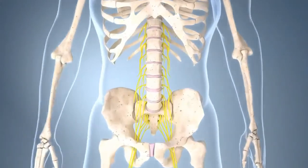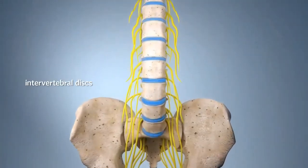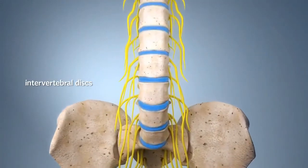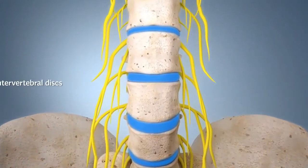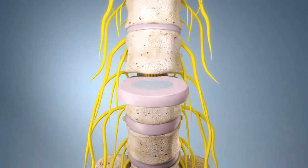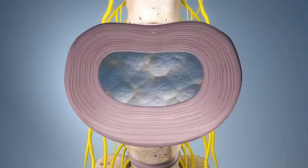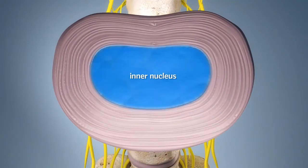Intervertebral discs are flexible elastic pads located between the individual vertebrae. They allow bending and rotation of the spine. Each disc consists of an inner nucleus called the nucleus pulposus,